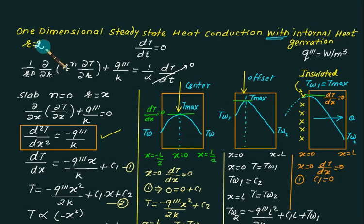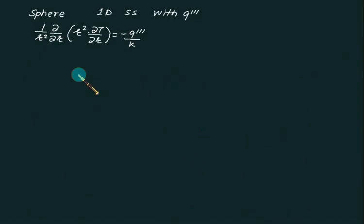To solve this further we will multiply R square on the right hand side and we can write this term as d by dR of R square into dT by dR equal to minus Q triple dash R square by K. So we can integrate now.